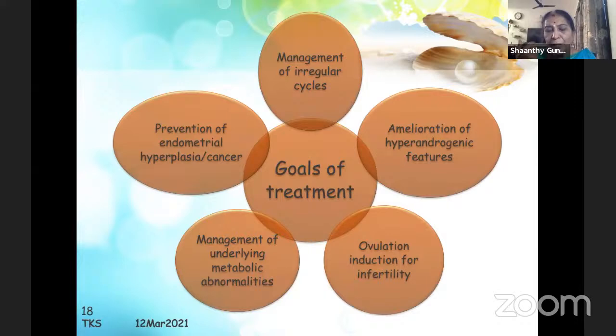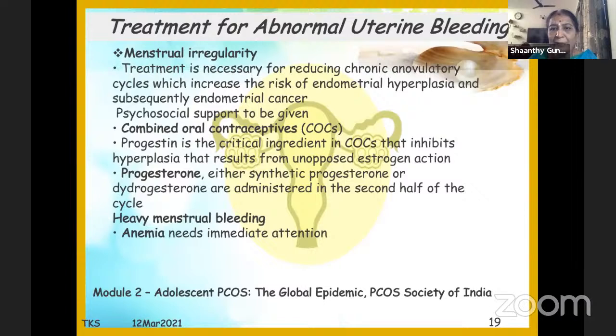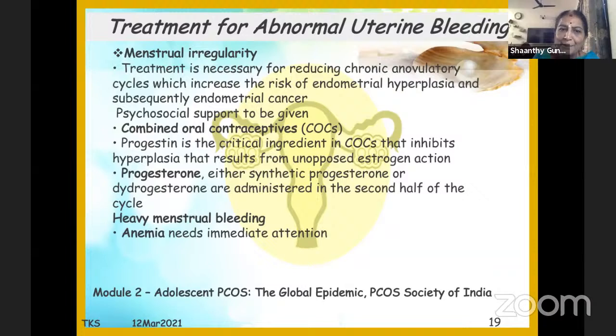The goals of treatment are: management of irregular cycles; amelioration of hyperandrogenic features; ovulation induction for infertility; management of underlying metabolic abnormalities; and prevention of endometrial hyperplasia and cancer. For abnormal uterine bleeding, treatment is aimed at reducing chronic anovulatory cycles, which increase the risk of endometrial hyperplasia and subsequently cancer. Psychosocial support is mandatory. Combined oral contraceptive pills are the sheet anchor, and progesterone can be given once every two to three months in adolescents for withdrawal bleed.